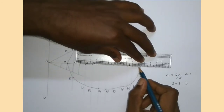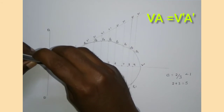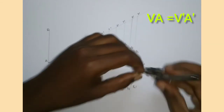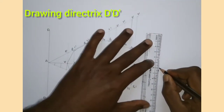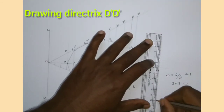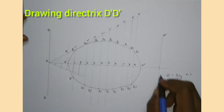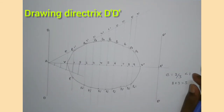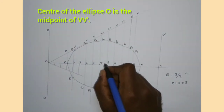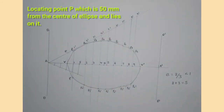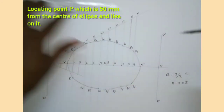I am extending the major axis and measuring VA on the compass. From V', I cut an arc on the major axis — that point is A', and the vertical line through A' is the second directrix D'D'. I find the center of the ellipse, which is the midpoint of V and V', and mark it as O. We also have to draw the tangent and normal at a point 50 mm from the center of the ellipse.